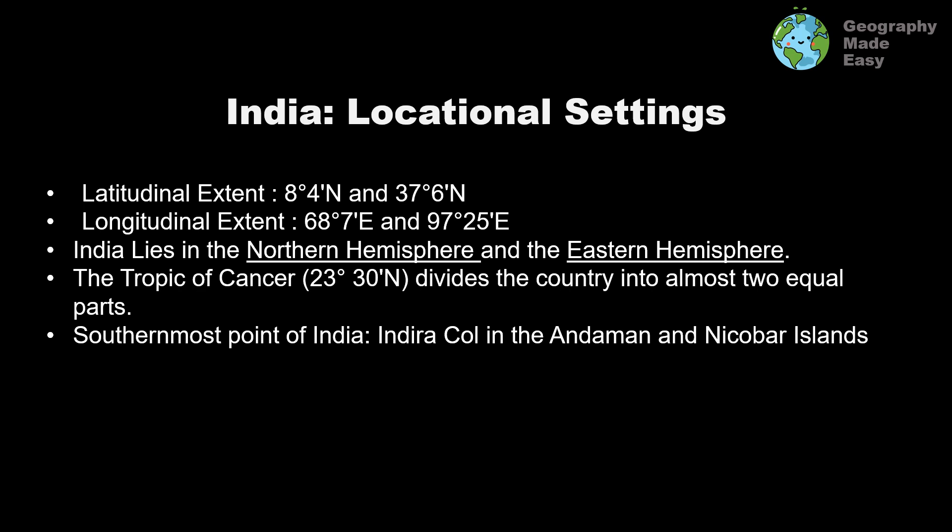India lies in the Northern Hemisphere. We have seen in the map that to the south is the equator and India is lying above the equator — 8 degrees above the equator. The Earth is divided into two hemispheres by the equator, which is the centermost latitude. The northern part is known as the Northern Hemisphere and the southern part is known as the Southern Hemisphere.